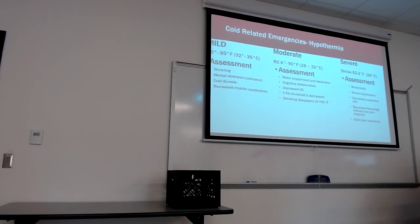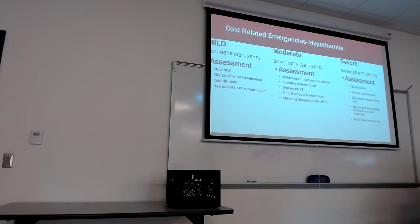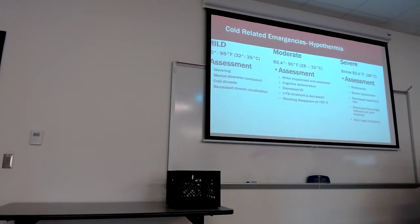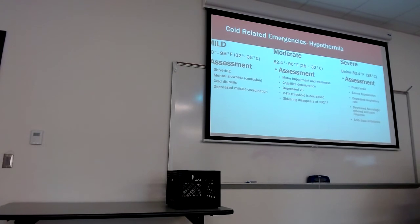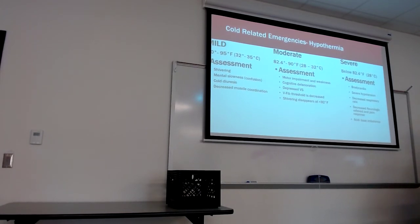Vital signs become depressed. In profound hypothermia, the patient may appear dead and not actually be dead — heart rate so slow it looks almost like asystole on the monitor, very low blood pressure, not breathing — but extremely cold. The rule is: you cannot pronounce a patient dead until their body temperature is at least 90°F. You have to warm them up before pronouncing them dead. You have to be warm and dead — you cannot be cold and dead.